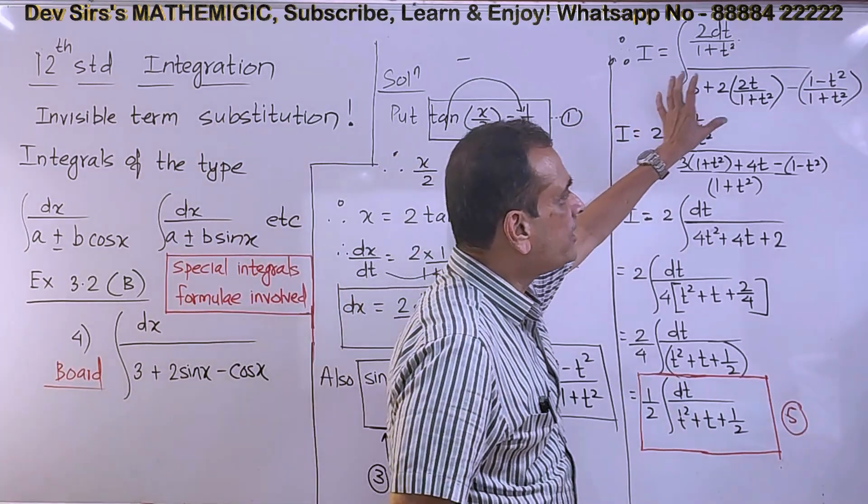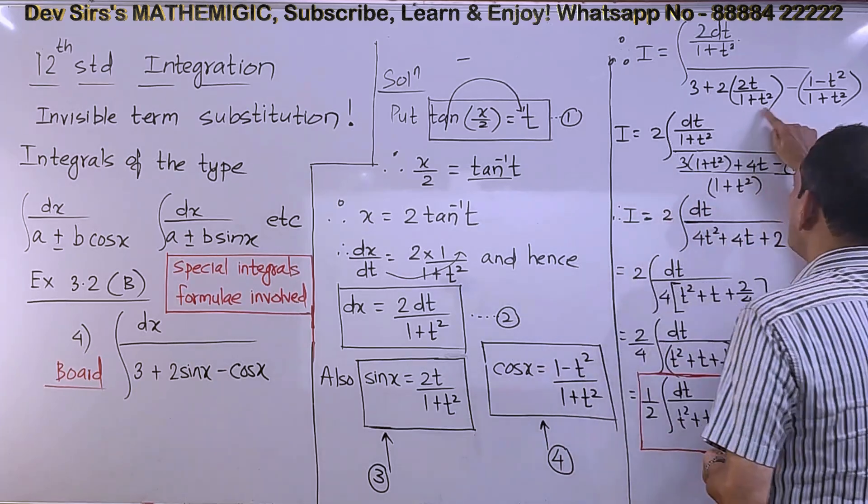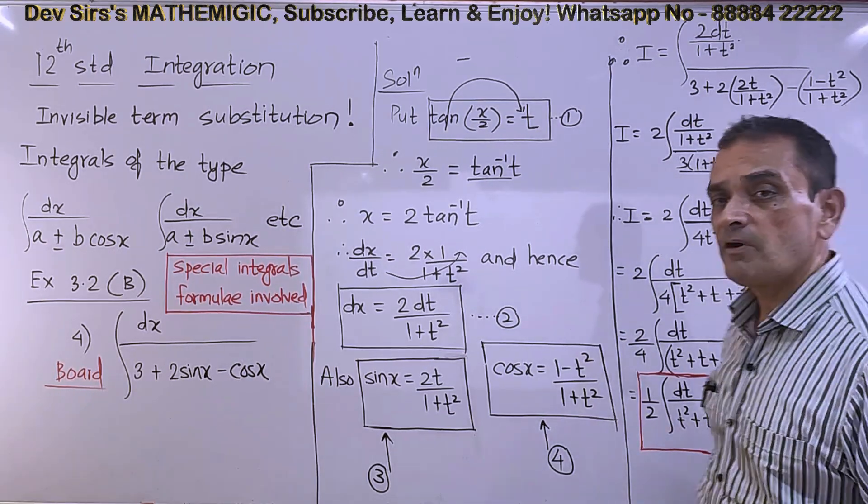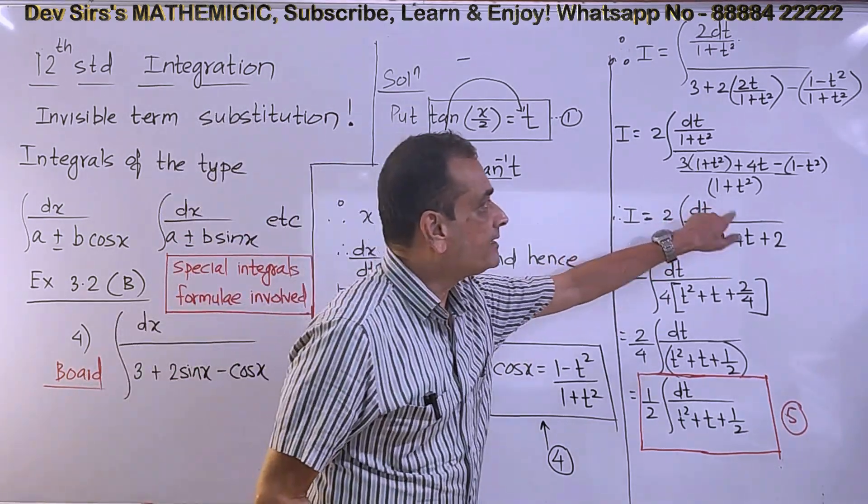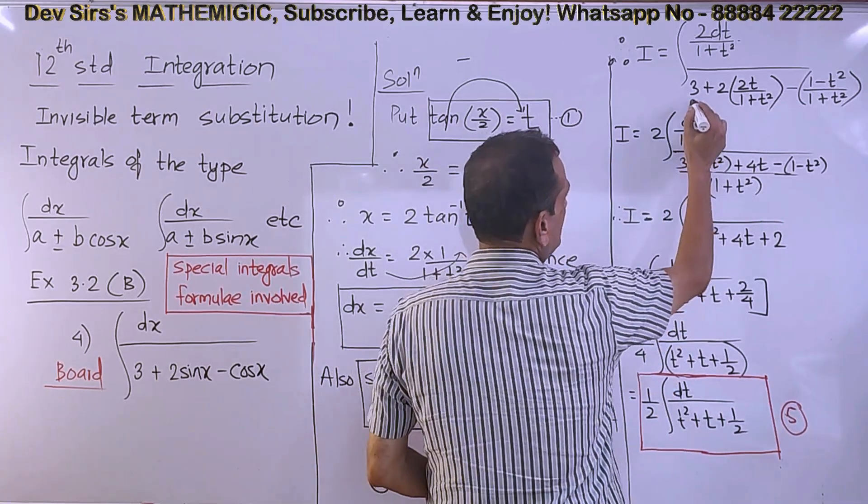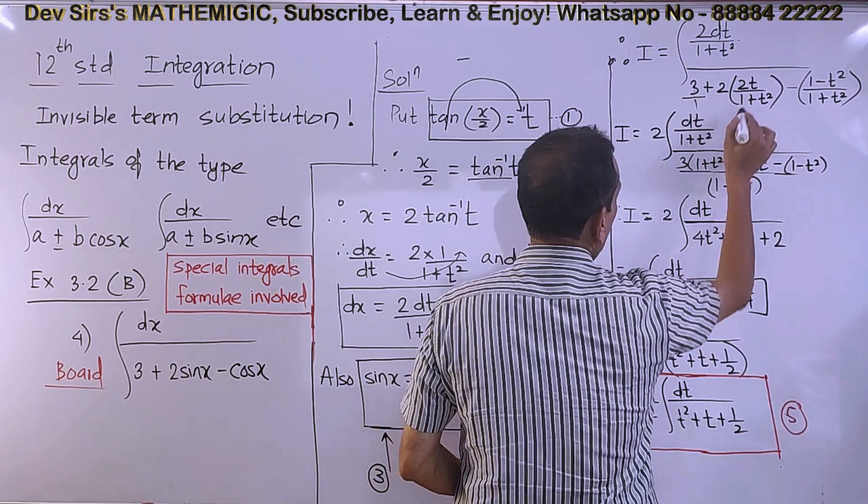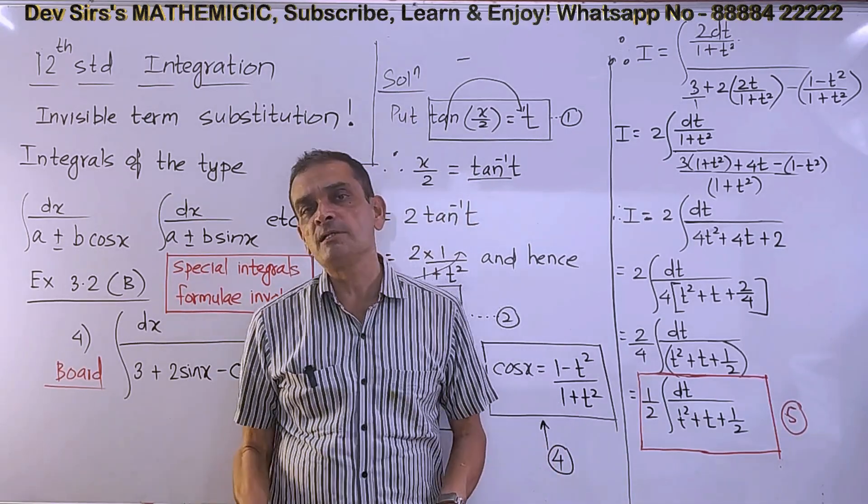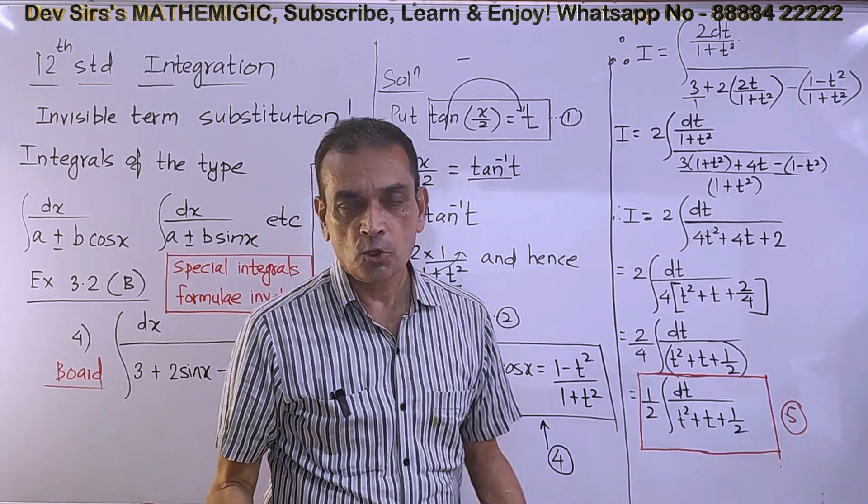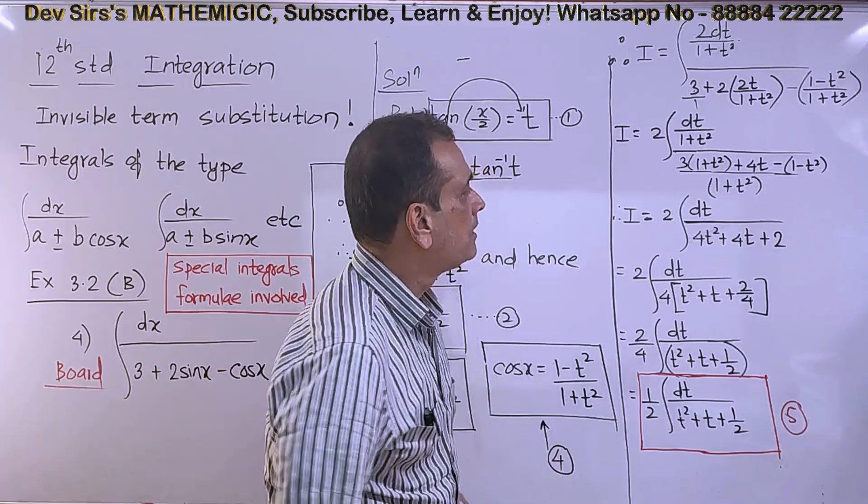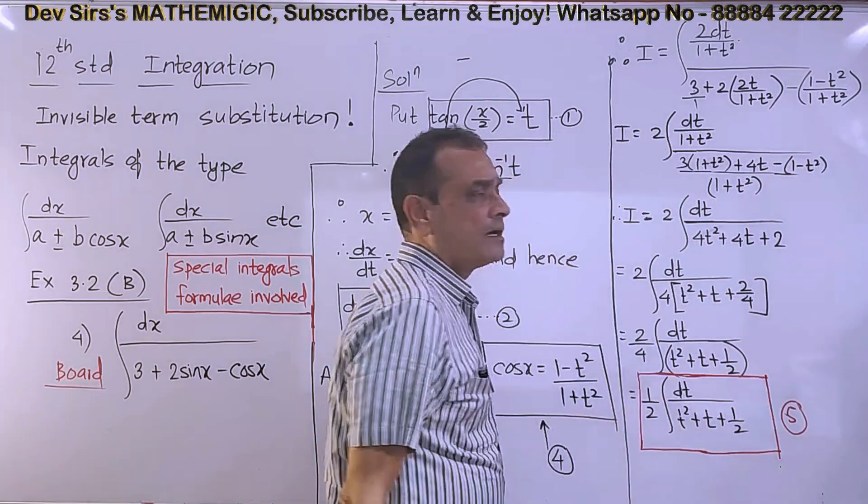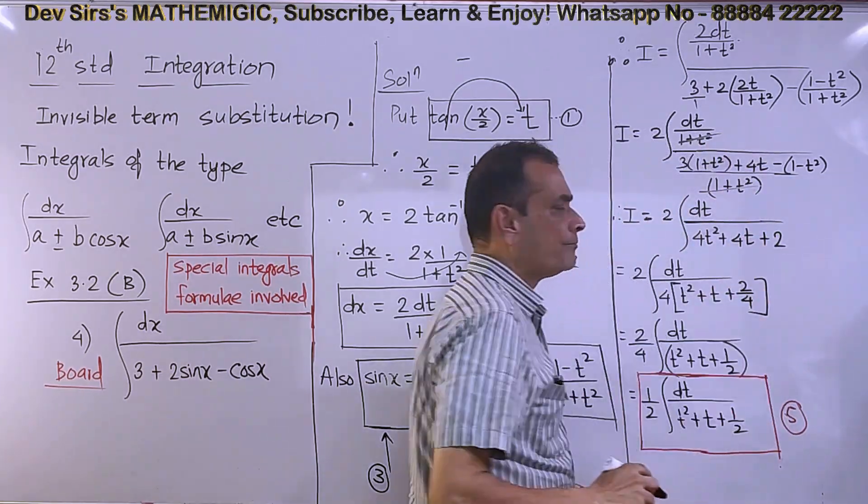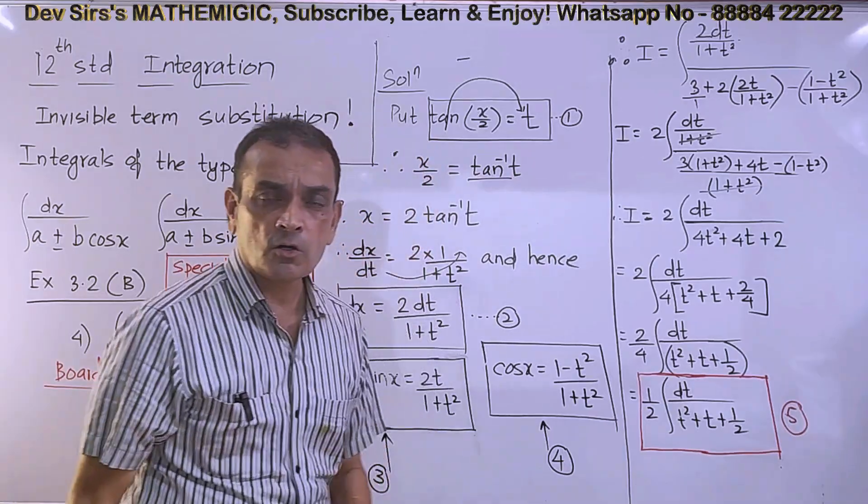After substituting, in the denominator, 1+t² is the LCM. There's one fraction, second fraction, and also 3/1. So I take 1+t² as the LCM. After taking the LCM, 3 times (1+t²), then we have the other terms. After finding the LCM, you are allowed to cancel. Don't cancel directly without finding LCM first.